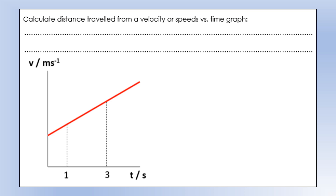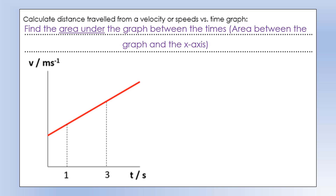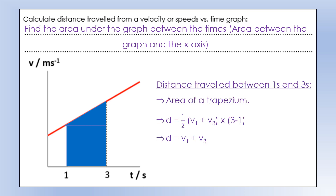From a velocity or speed versus time graph, we can also find how far an object has traveled by finding the area under the graph between the times we're interested in — the area between the line and the x-axis. For example, to find the distance traveled between one and three seconds, we find the area of that trapezium: the average of the two sides (v1 and v3) multiplied by the base (the time interval).